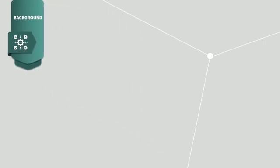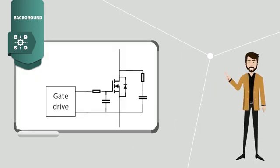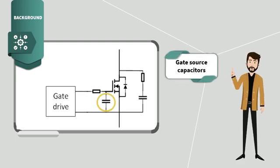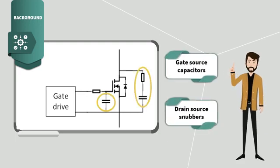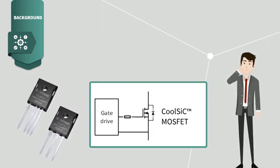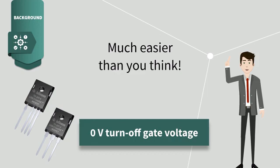We all agree that silicon carbide MOSFETs are very fast-switching devices, and there is a belief that driving a SiC MOSFET is difficult as people tend to overcomplicate it by adding, for instance, gate source capacitors and drain source snubbers. Maybe it is true for some devices, but driving a CoolSiC MOSFET is much easier than you think. In fact, it can even be driven with a zero-volt turn-off gate voltage.